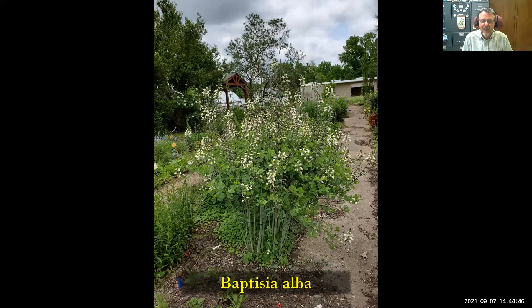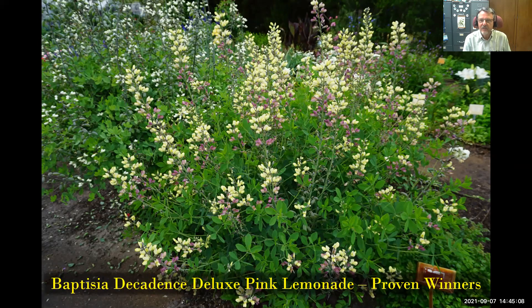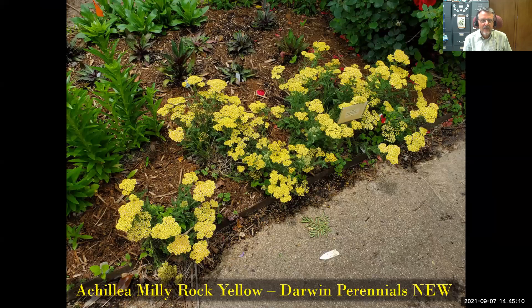To expand the palette, Baptisia alba is a perennial I've had for several years — baptisias take a long time to get established, but this is what they can look like given the time. From the Decadence series, Deluxe Pink Lemonade is more compact but with beautiful colors, and you can see how it's established over the years to make a spectacular spring show.